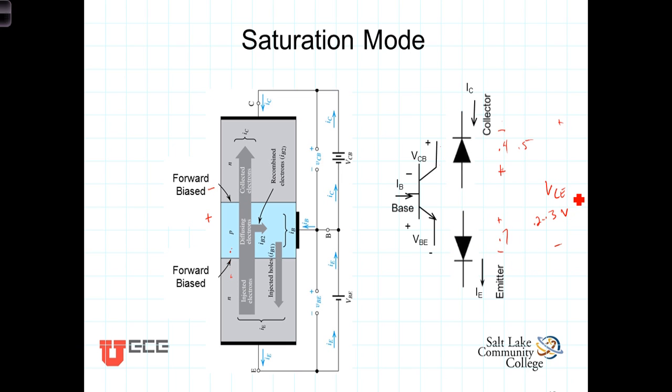VCE will be on the order of 0.2 to 0.3 volts. That voltage across the saturated transistor is referred to as VCE sat, the saturation voltage. The transistor is relatively constant for values of current flowing through it. Again, most of those currents are established by the circuitry around the transistor.